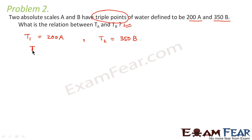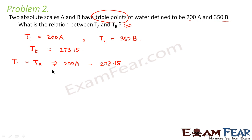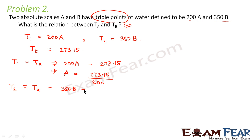We know that the triple point of water on the Kelvin scale is 273.15. So the temperature on scale A at the triple point should equal the temperature on the Kelvin scale, giving us 200A = 273.15, therefore A = 273.15/200. Similarly, 350B = 273.15, therefore B = 273.15/350.